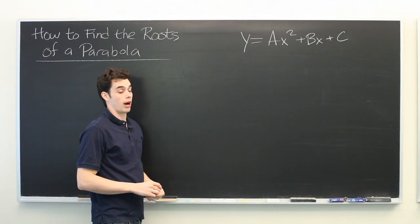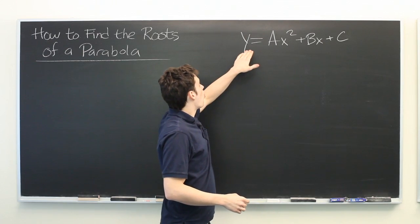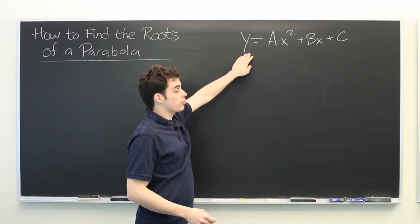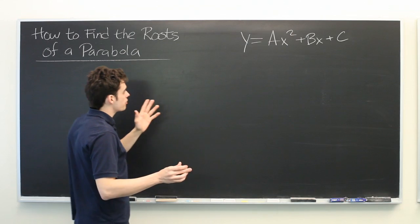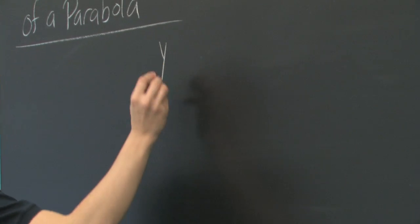The roots of the parabola are the x values for which y is zero. Sometimes this is very easy to find, other times you'll need a special formula. Let's go through some specific examples.